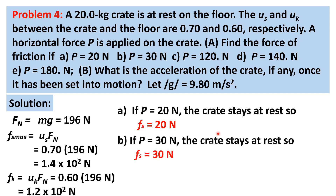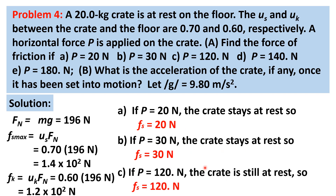For letter B, if P = 30 Newtons — still below the maximum static friction — the crate remains at rest and F_s = 30 Newtons. For letter C, if P = 120 Newtons — still lower than 140 Newtons — the crate is still in equilibrium and F_s = 120 Newtons, to satisfy ΣFx = 0.